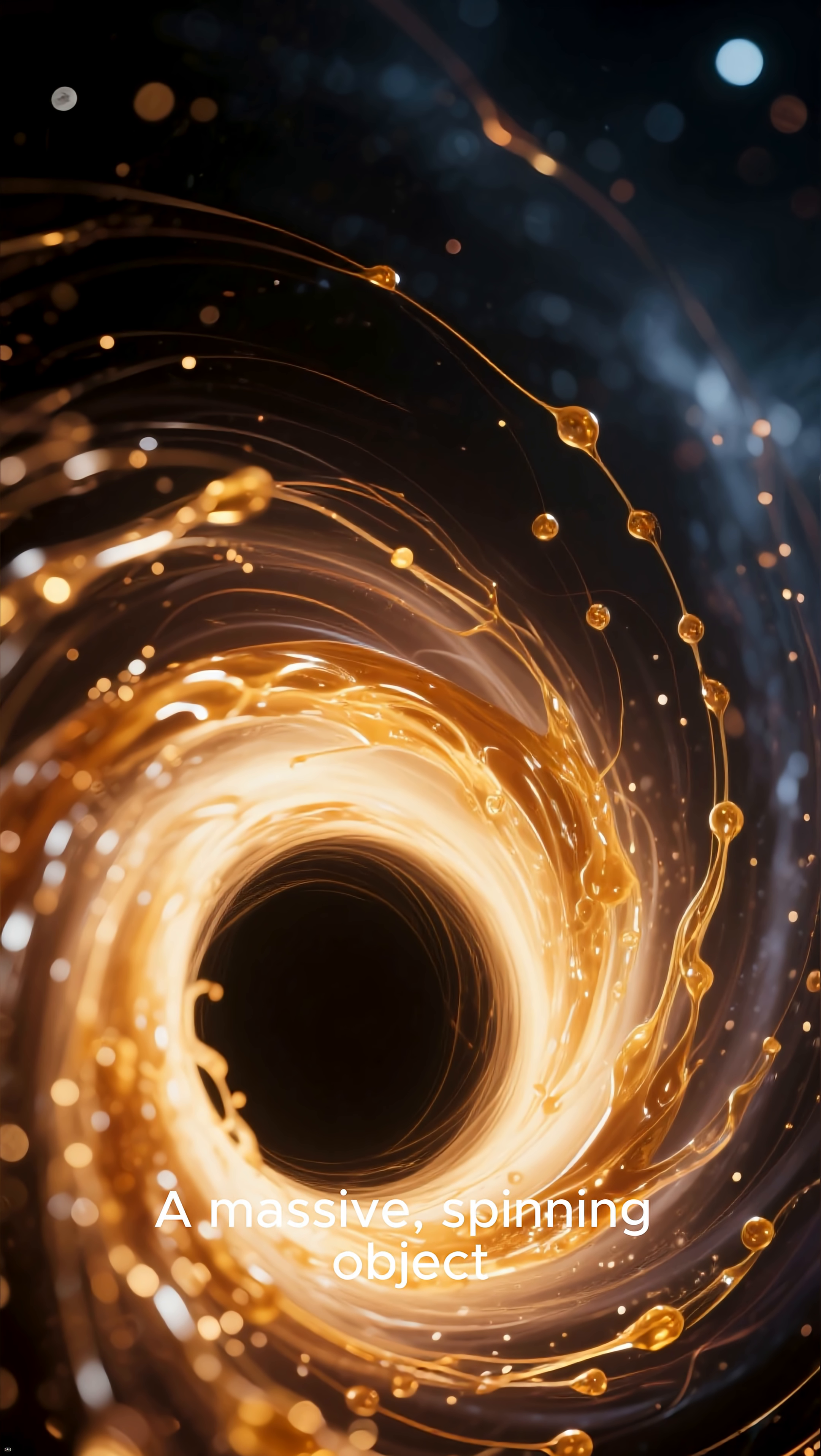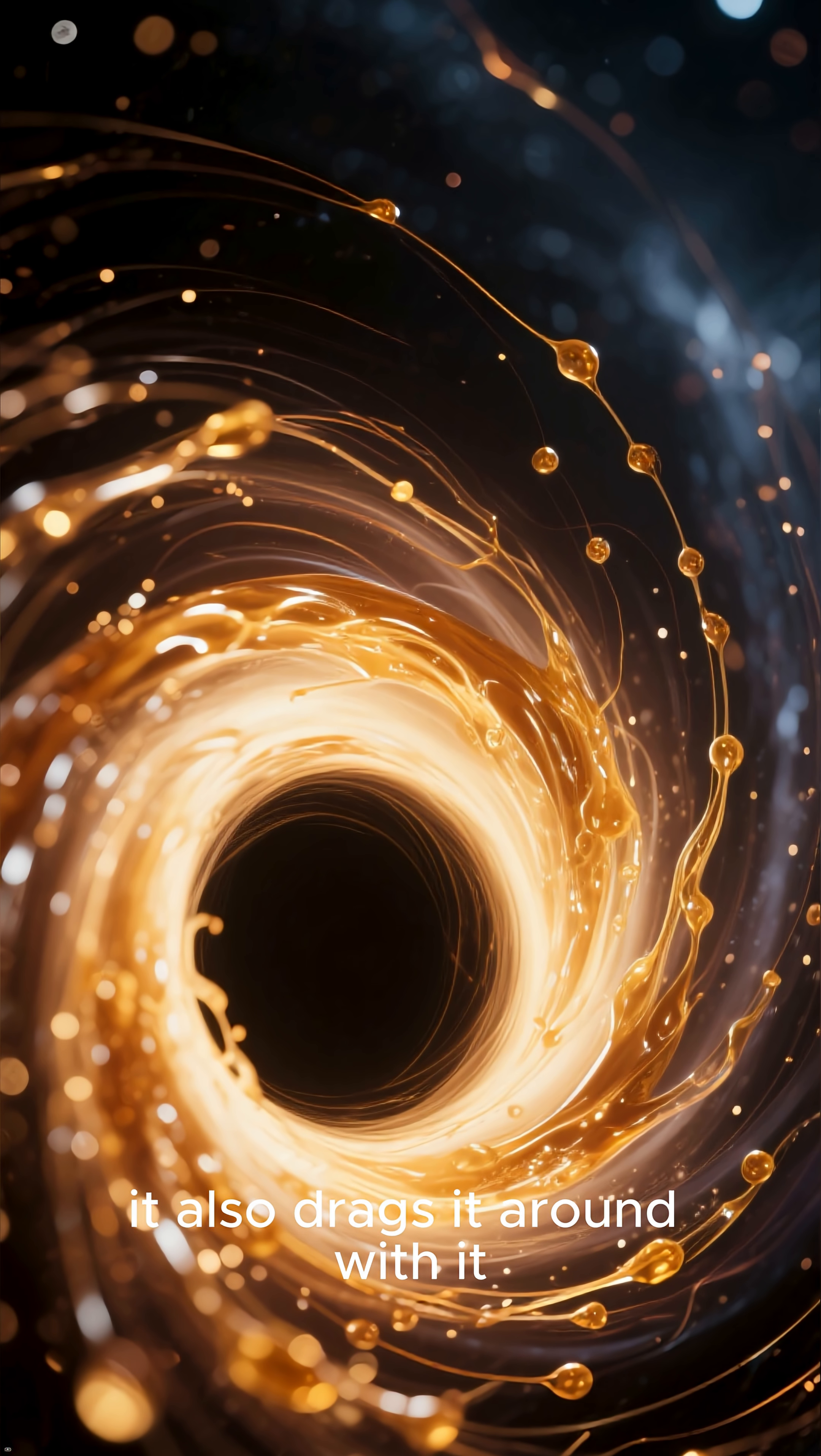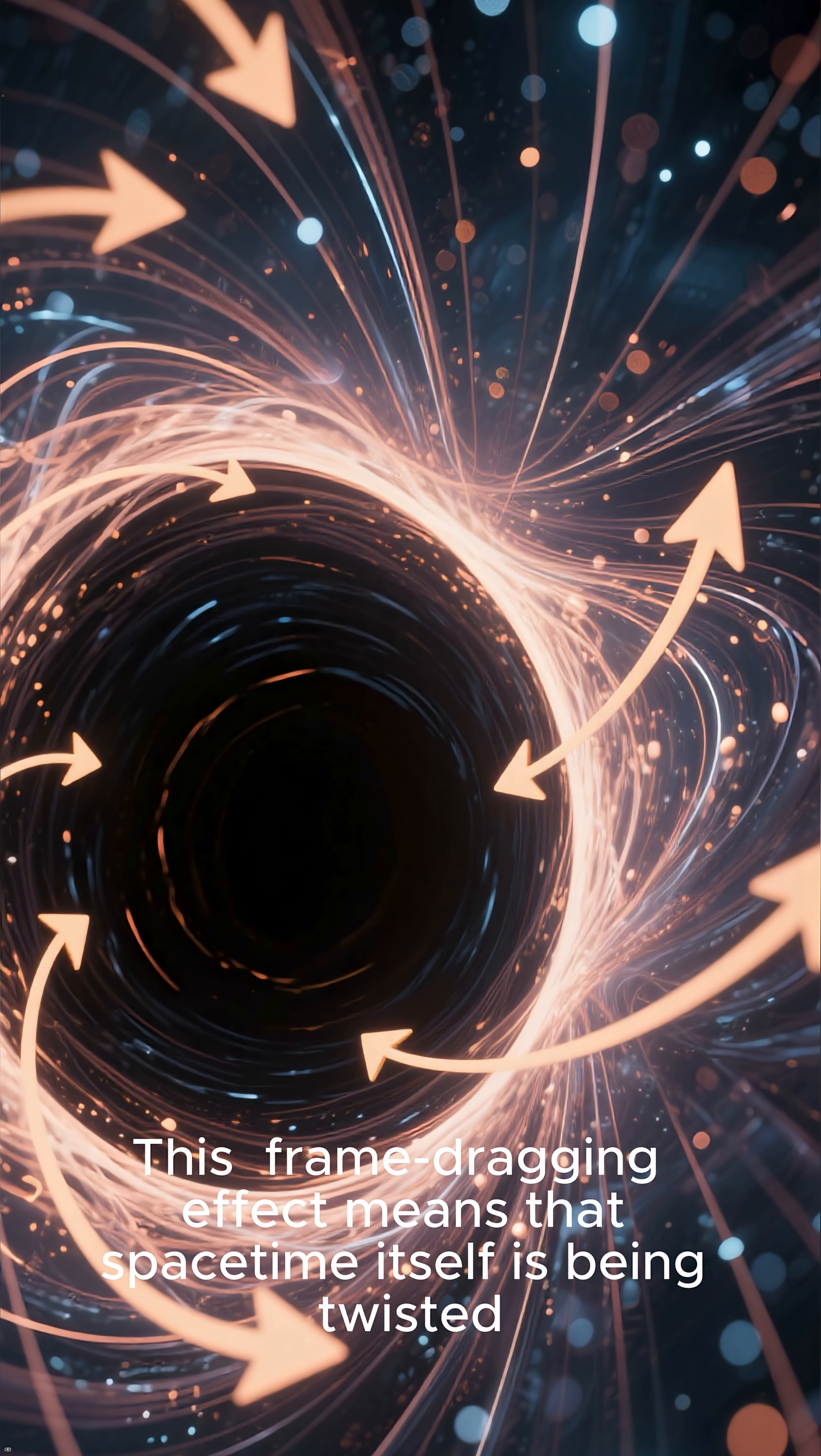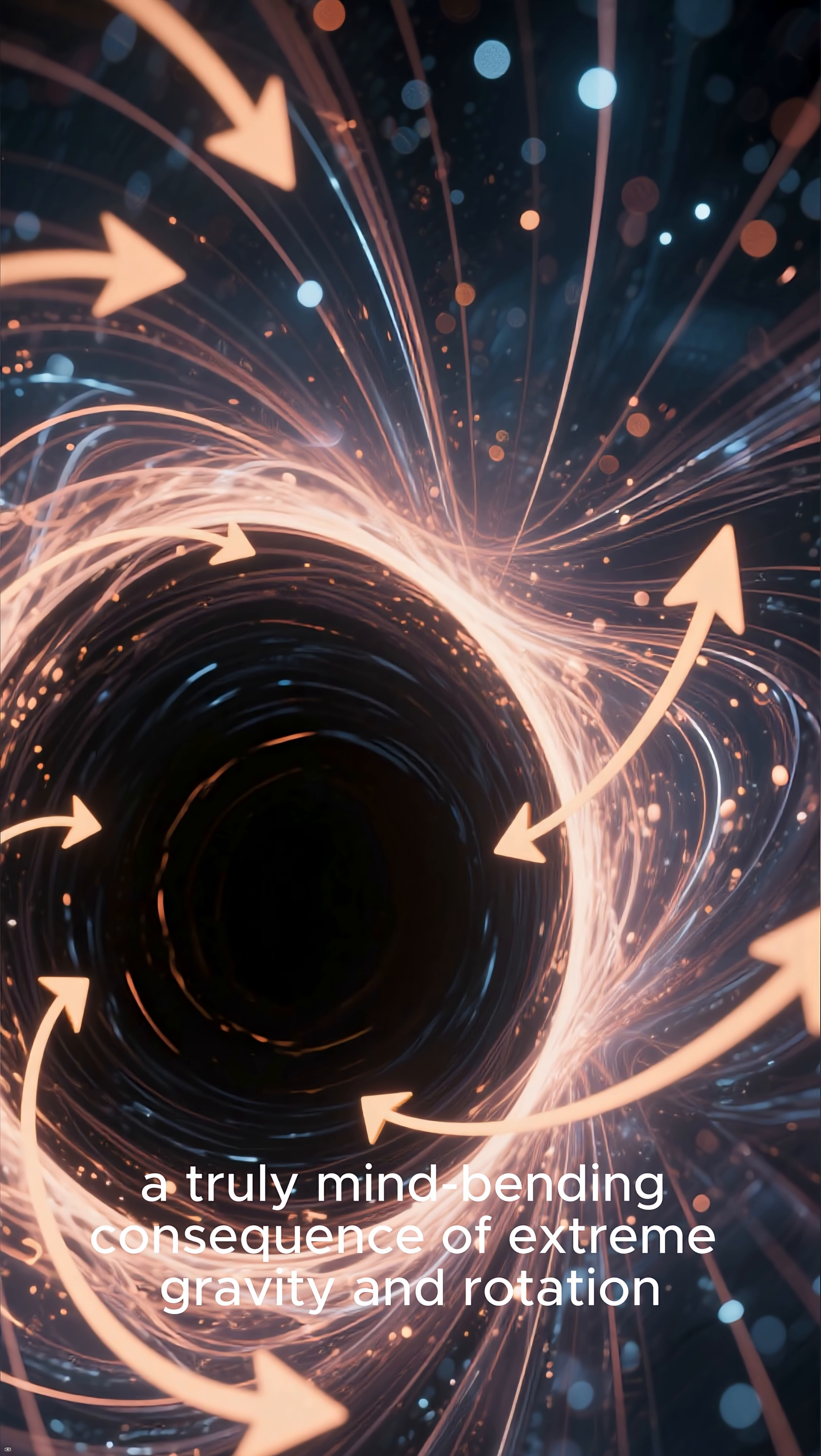Number 4. A massive spinning object, like a rapidly rotating black hole, doesn't just curve space-time. It also drags it around with it, like a spoon stirring honey. This frame-dragging effect means that space-time itself is being twisted and pulled by the rotating mass. A truly mind-bending consequence of extreme gravity and rotation.